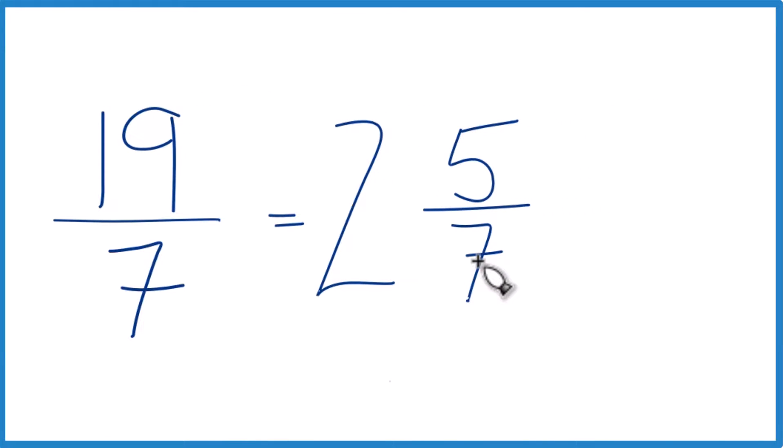2 times 7 is 14. 14 plus 5 is 19. And then we just bring the 7 across. That's what we started out with.